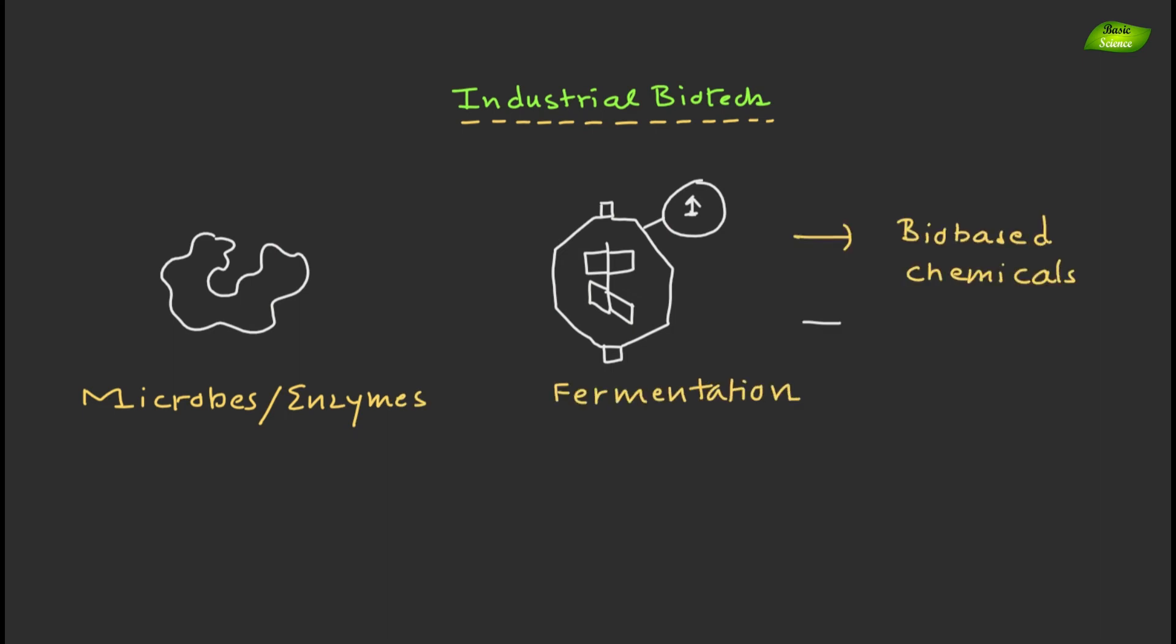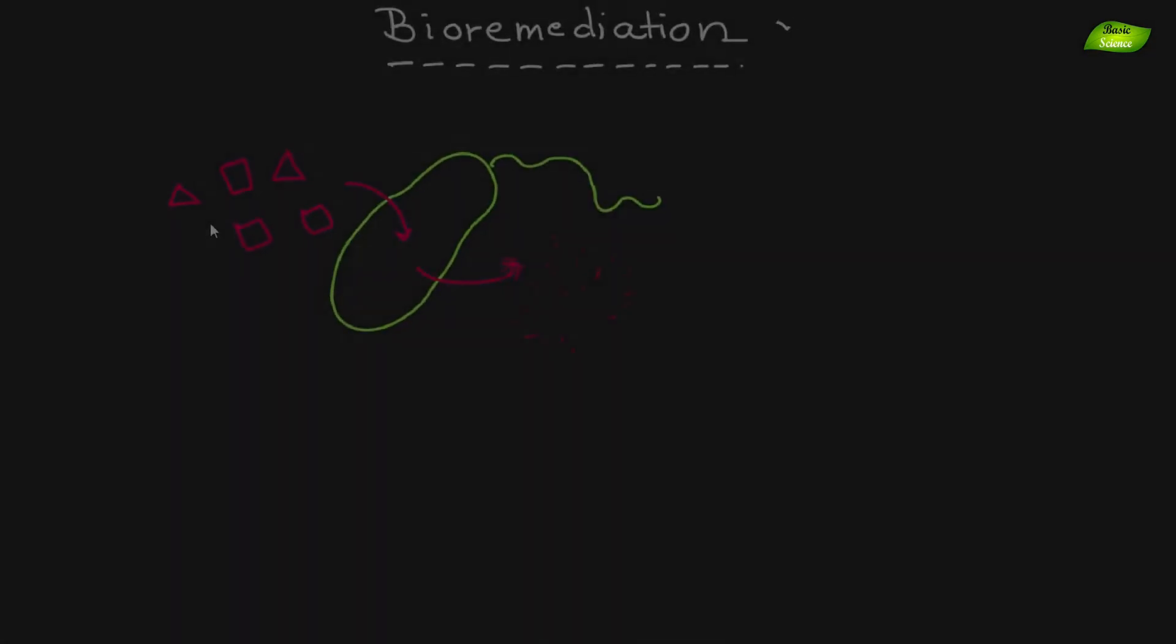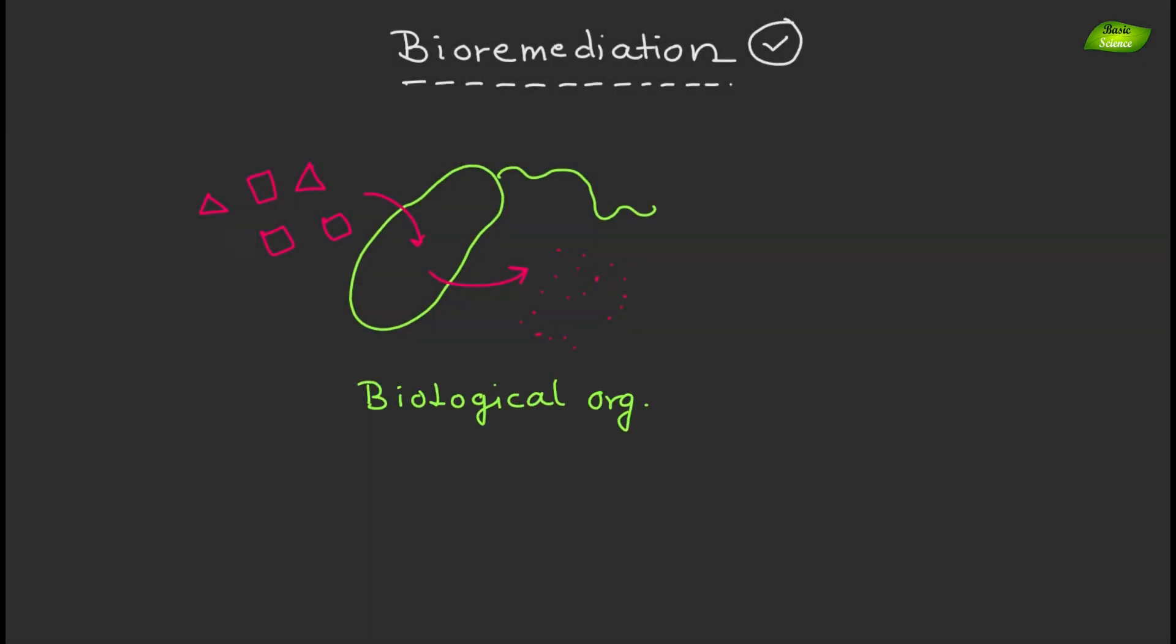Industrial biotechnology utilizes microorganisms, enzymes and fermentation processes to produce bio-based chemicals, biofuels and biodegradable materials as alternatives to fossil fuels and petrochemicals. Bioremediation techniques leverage biological organisms to degrade pollutants and detoxify contaminated environments, offering eco-friendly solutions to environmental challenges.